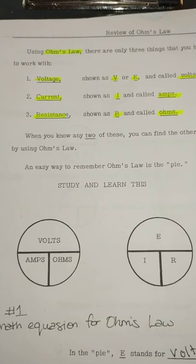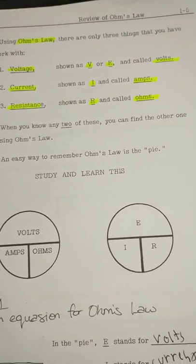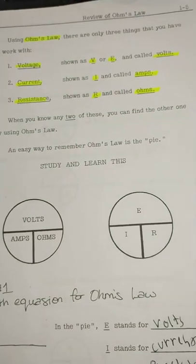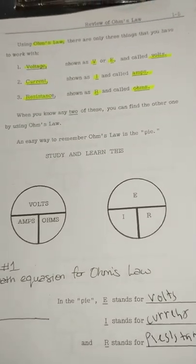Ohm's law. There are only two things that you have to work with. Voltage, V, volts. Current, I and E, amps. Resistance, R, and ohms. When you know any two of these, you can find the other one. Ohm's law.